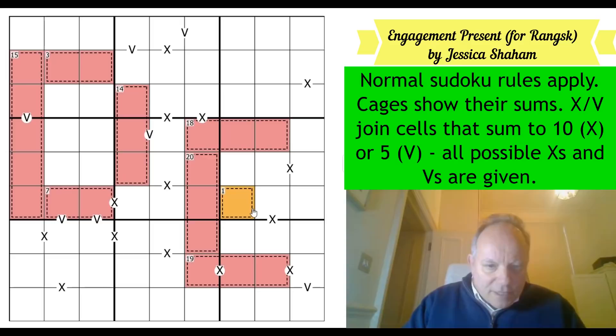And although there's no given digits in the grid, look, this is effectively a given. We can put a one in that tiny cage straight away. And yes, these two add up to 10. In a 19 cage, that means this remainder must be nine. That gives us an X and a V straight away. So we've got digits in the grid right from the get-go. So this three is a two, one pair.